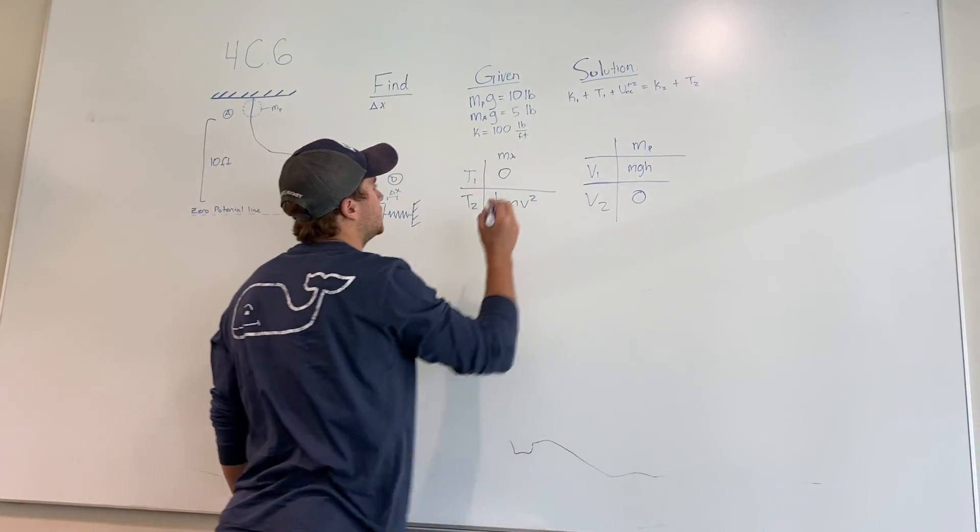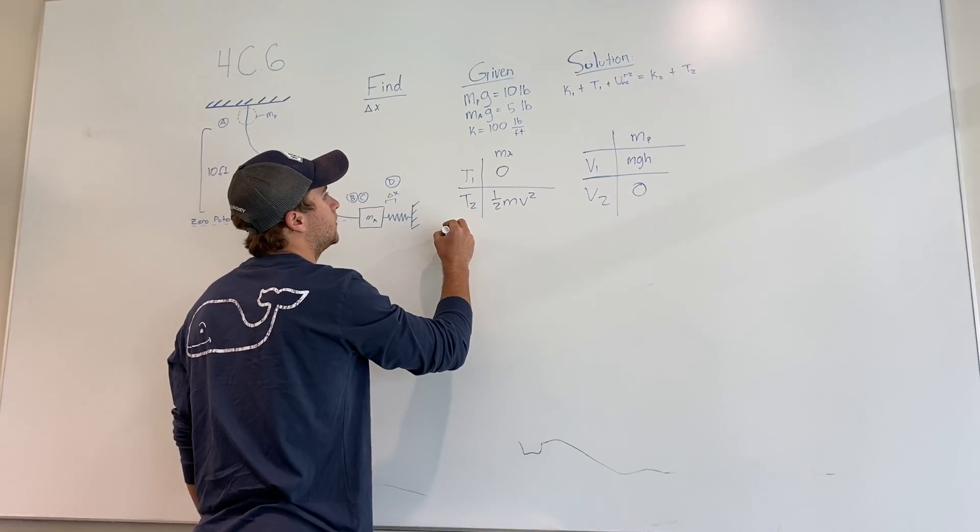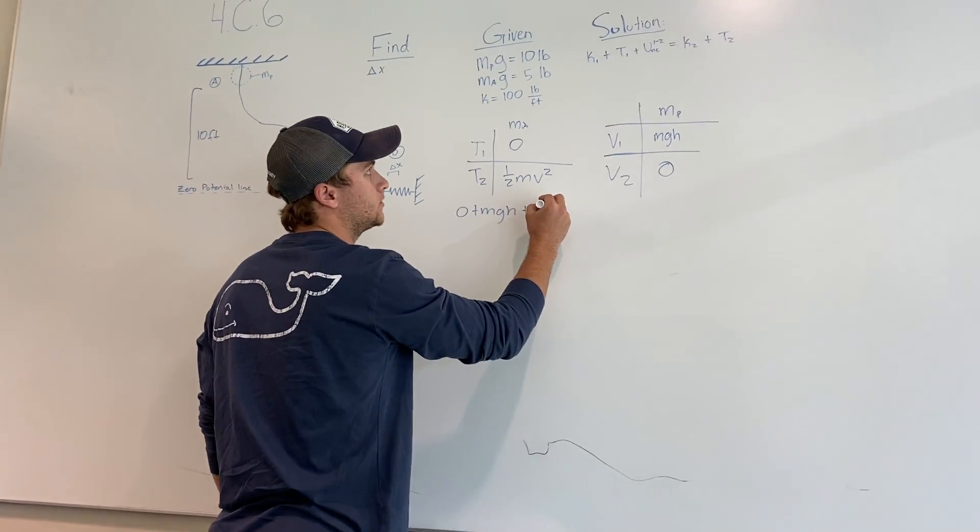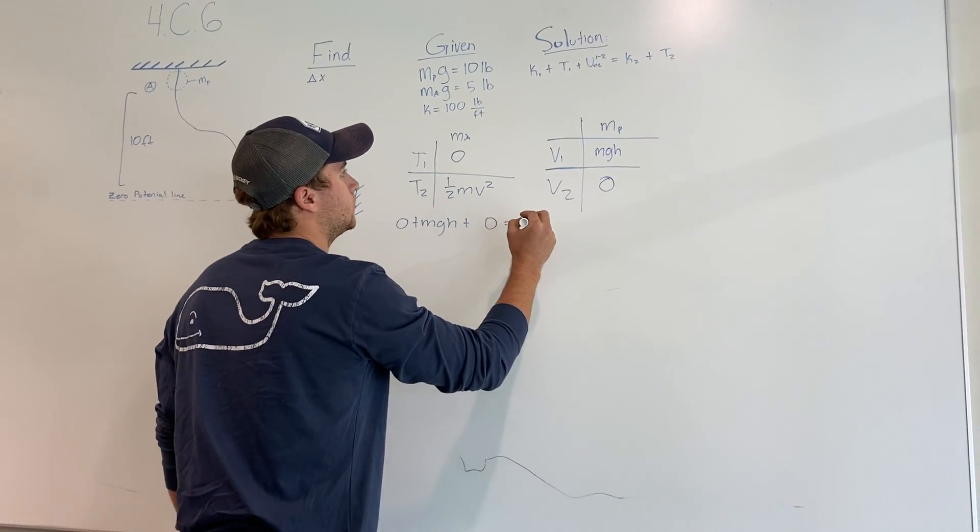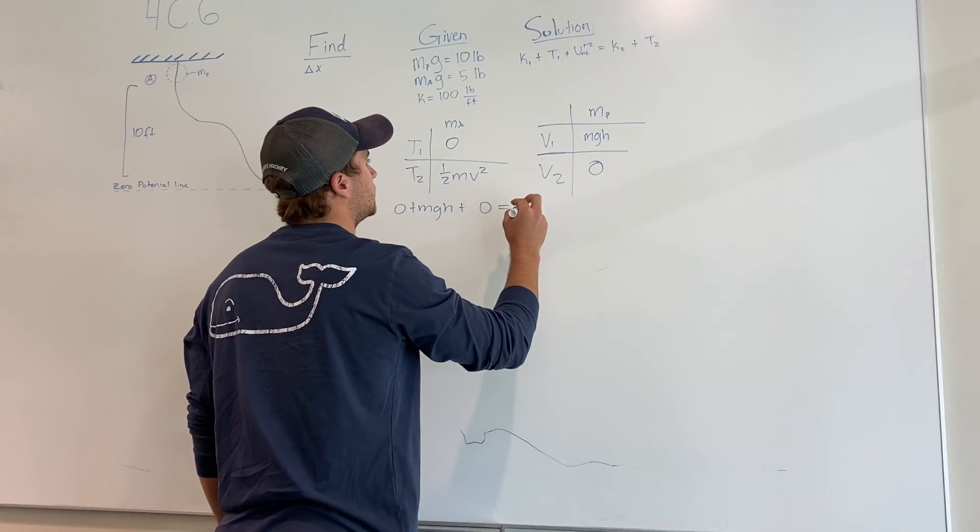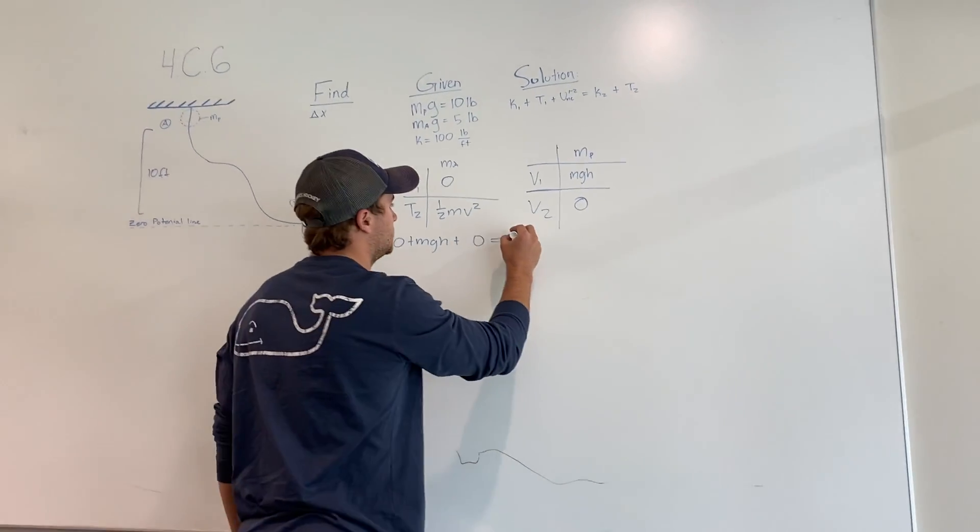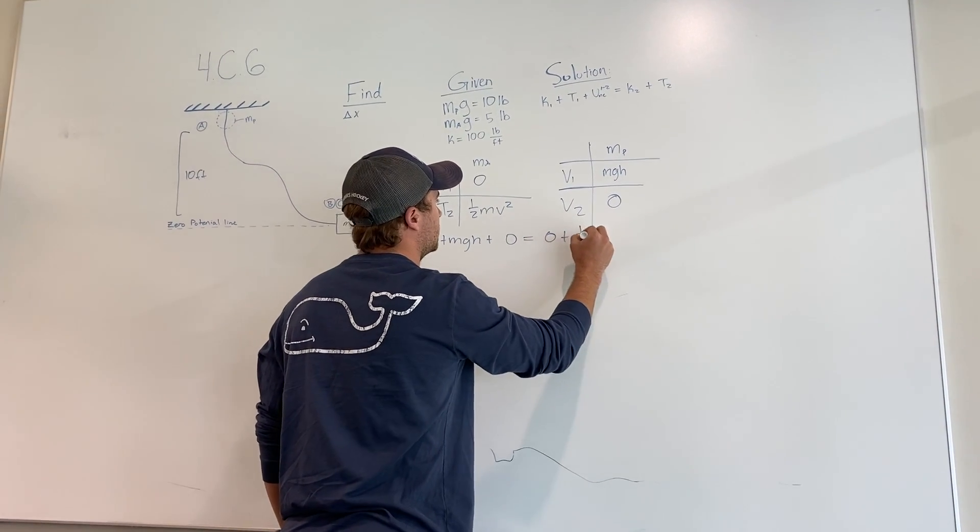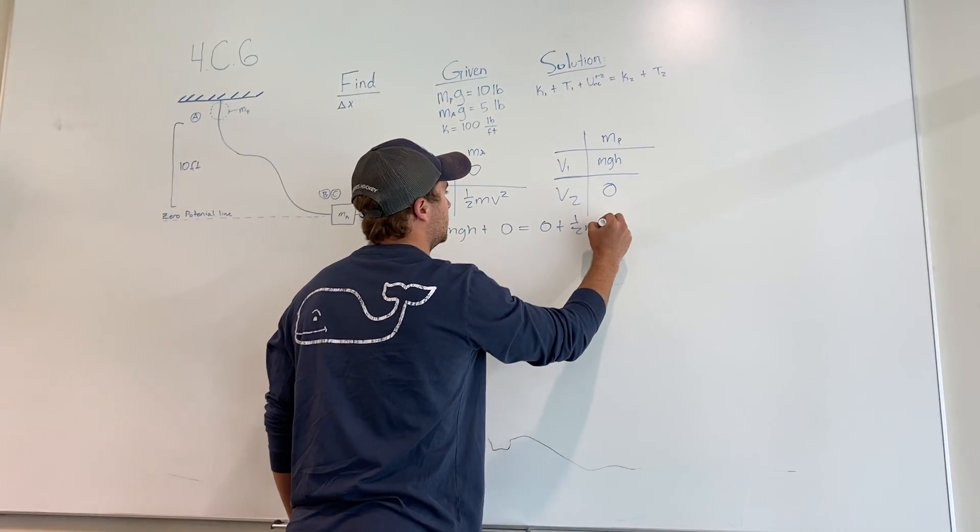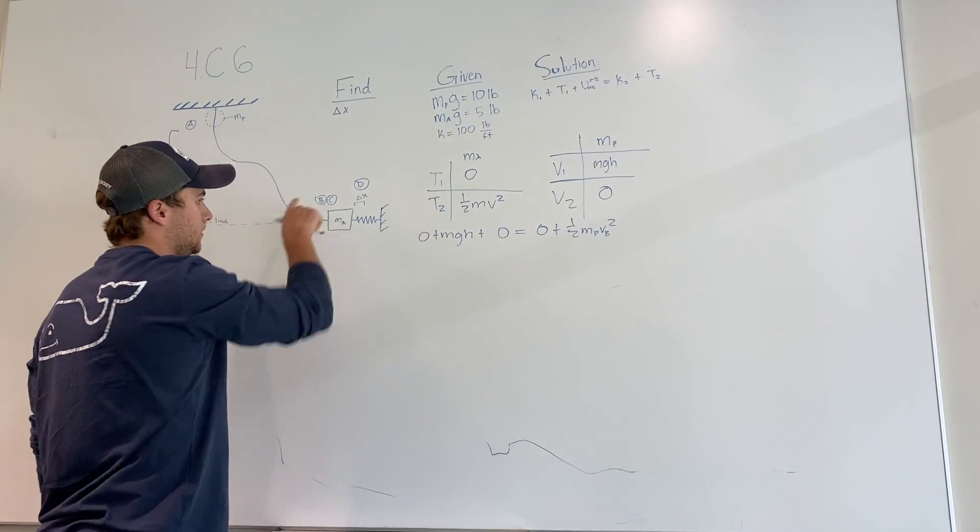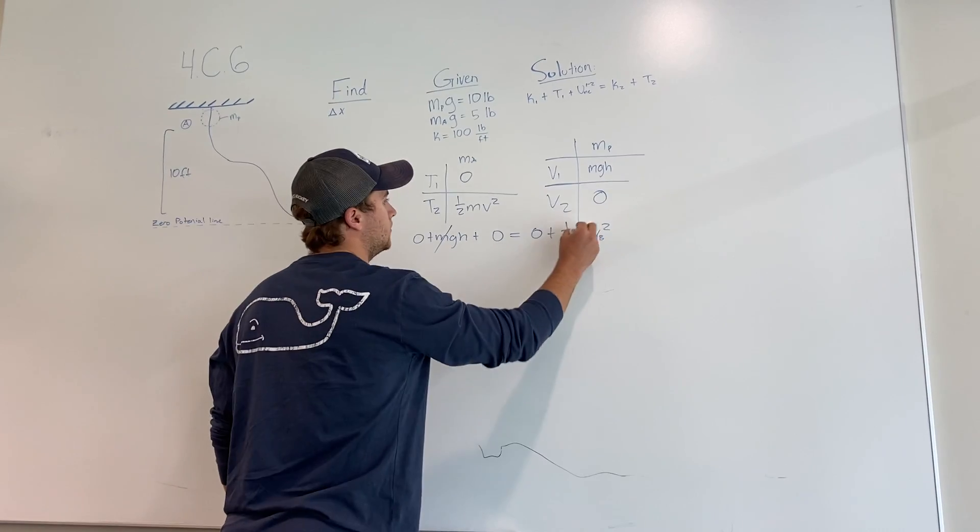So given all that, using this equation would be zero plus M G H plus no non-conservative forces equals the potential, which is zero plus one half M P V squared, which will be V at point B.